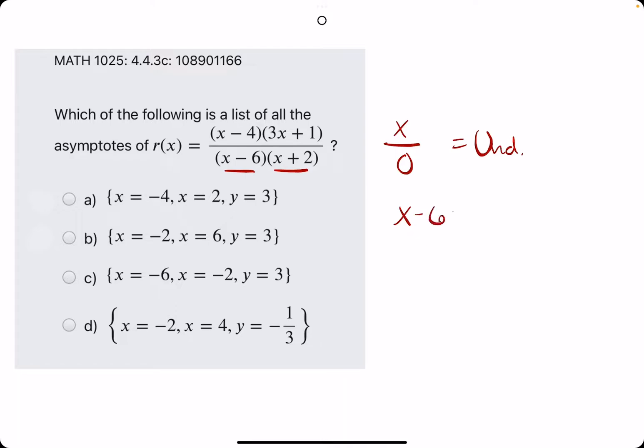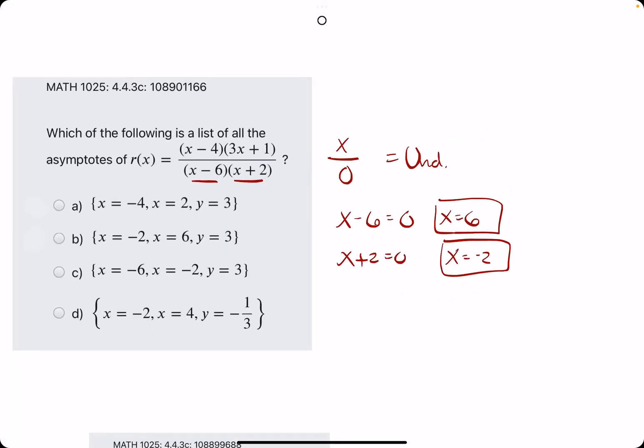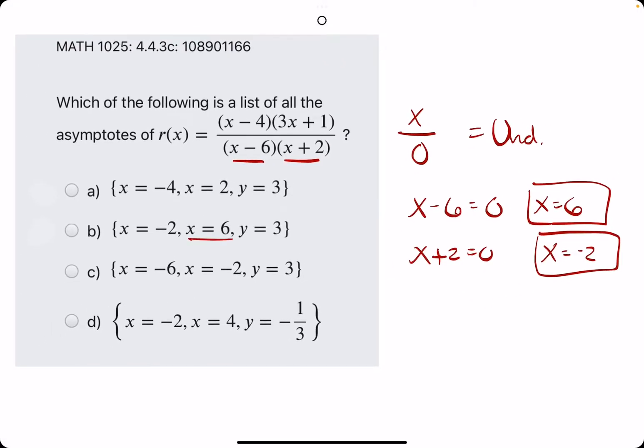And so what we do is set each factor equal to zero, each factor that's in the denominator. And then when we solve for each of these x values, it tells us the x values that make the factors in the denominator, therefore the entire denominator, equal to zero. So we're looking for x equals six and x equals negative two. So if we find a set of asymptotes that have both of those, then we found our answer.